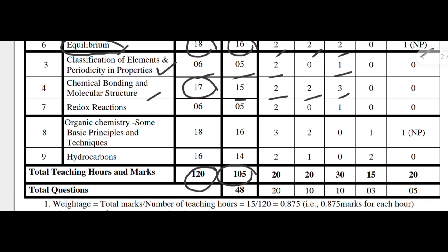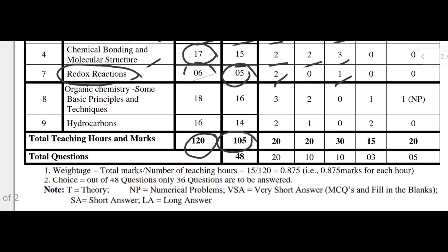Chapter 7 is 'Redox Reactions,' with six teaching hours and five marks allotted — two VSA of two marks, and one short answer carrying three marks.